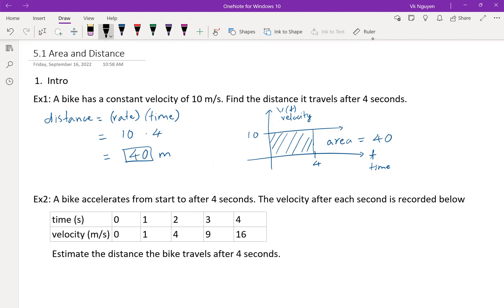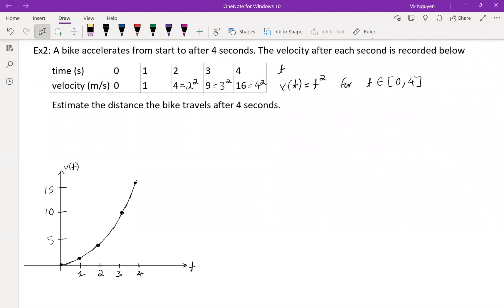Look at the data and you will see that 4 is the same as 2 squared, 9 is 3 squared, 16 is 4 squared. So if we let t to be the time, then the velocity is v(t) equals t squared, for t in the interval from 0 to 4. This is just a parabola. We can sketch the parabola. And from example number one, we will see that the area below this parabola is the distance.